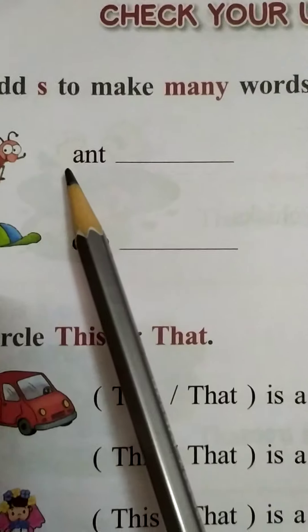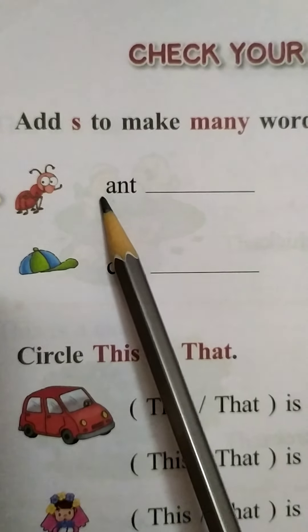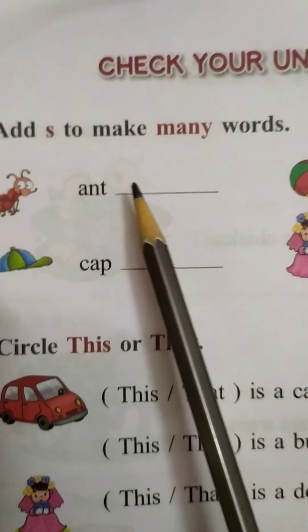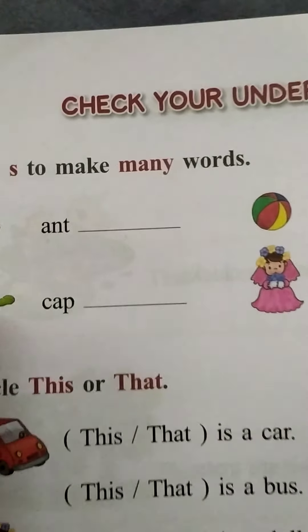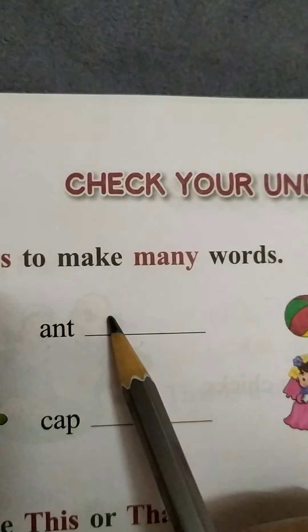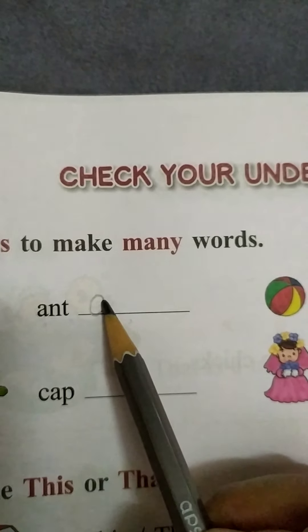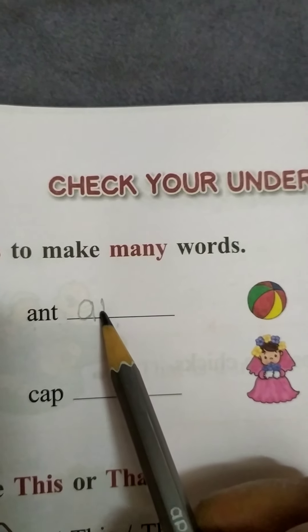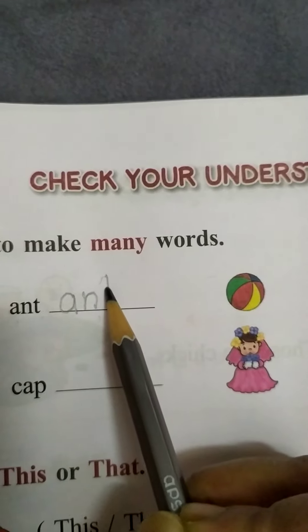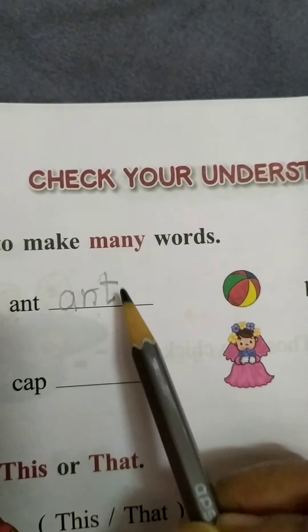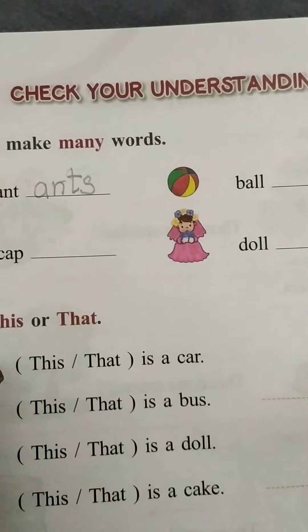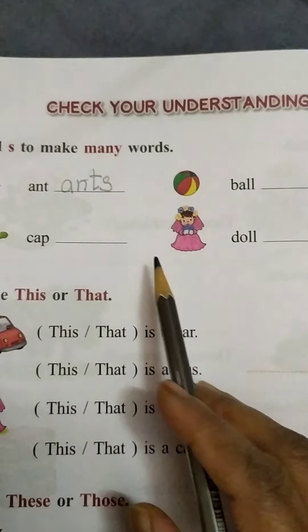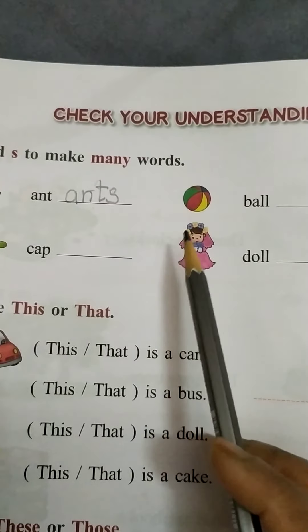Now, here, ant. A-N-T. Ant. Now, to make it many, we need to use S. We will see how. A-N-T-S. Ants. So, remaining words also you will be making like this. To make many.